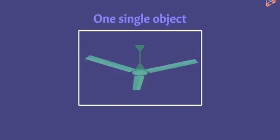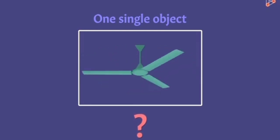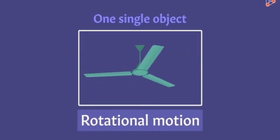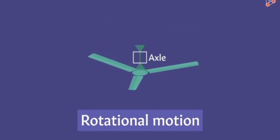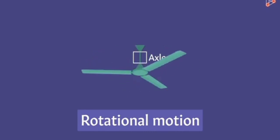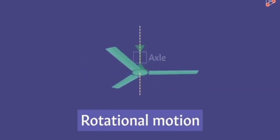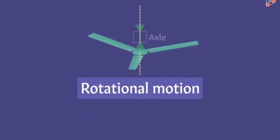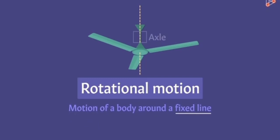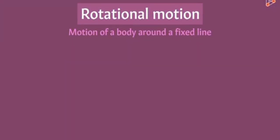The fan is undergoing rotational motion. The rod here is called the axle, and the entire fan is spinning around this axle — around this fixed line. This type of motion is what we call rotational motion. A body is said to be performing rotational motion if it is spinning around some fixed line, and that fixed line is called the axis of rotation.